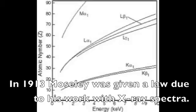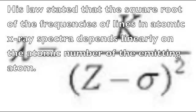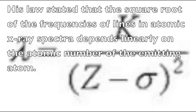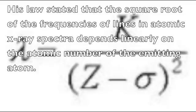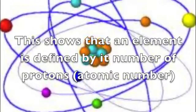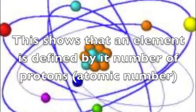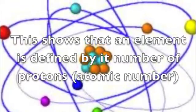In 1913, after Mosley's work with X-Ray Spectra, he was given a law dedicated to him. His law stated that the square root of the frequencies of lines in the atomic X-Ray Spectra depends linearly on the atomic number of the emitting atom. This helped contribute to the modern-day theory of the atom by showing that an element is defined by its number of protons, also known as its atomic number.